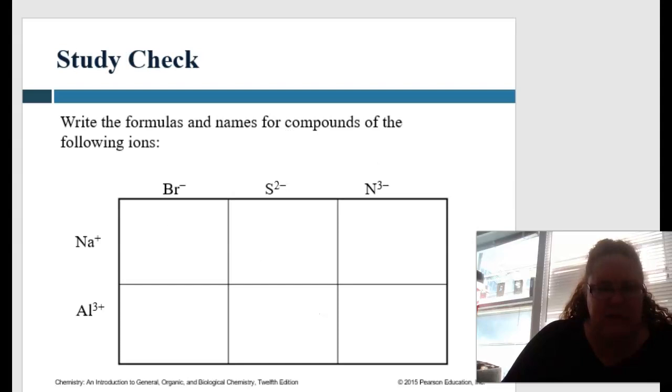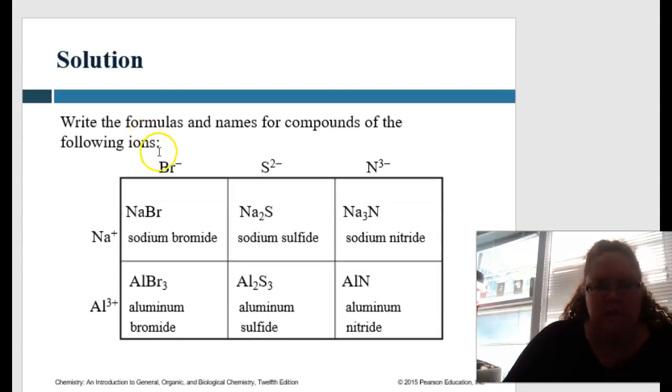So write the formulas and names and compounds for these following guys. Okay, pause me. All right, so sodium bromide, aluminum bromide, sodium sulfide, aluminum sulfide, sodium nitride, and then aluminum nitride. Okay, so pretty straightforward. And once again, once you get practicing, it ends up like flowing off your tongue.